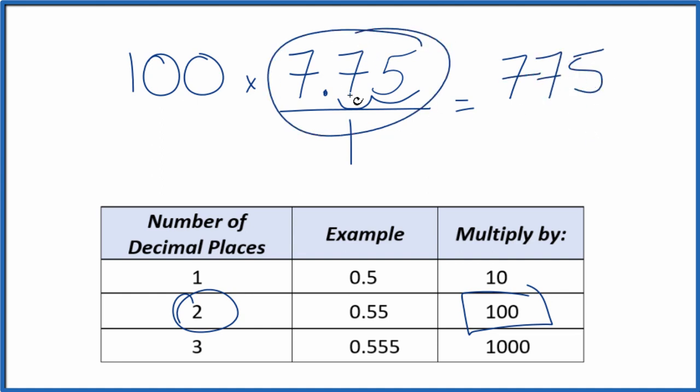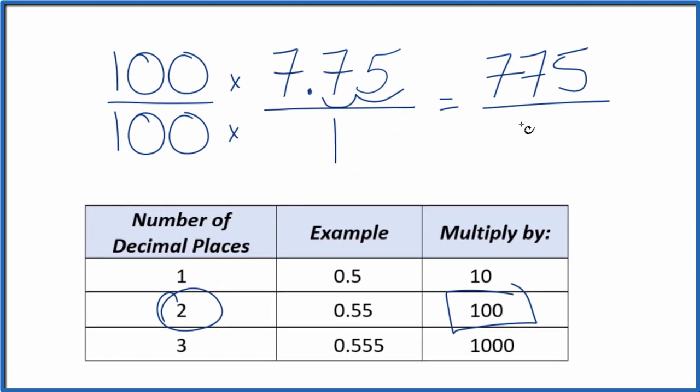But I can't just multiply the numerator here by 100. I need to also multiply the denominator by 100. That's because 100 over 100 is just 1. 100 divided by 100 is 1. It means we're multiplying by 1. We don't change the value, just the way we represent that. So 100 times 1 equals 100. And now we have our fraction.